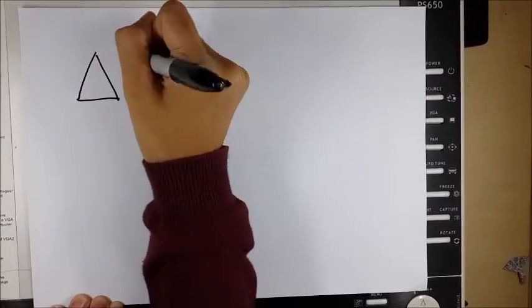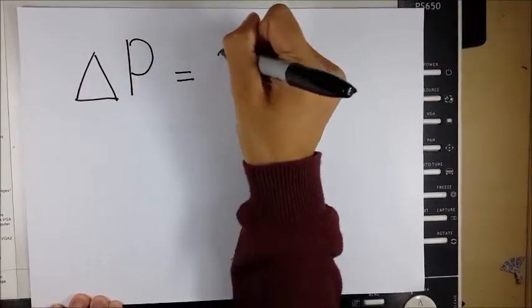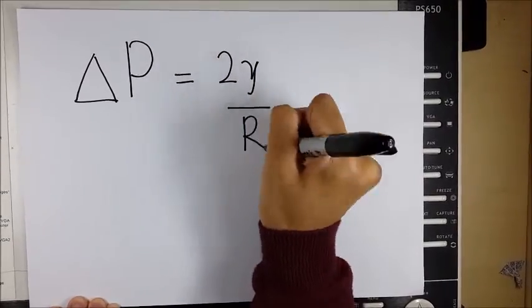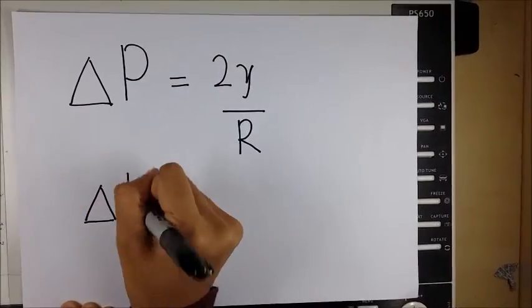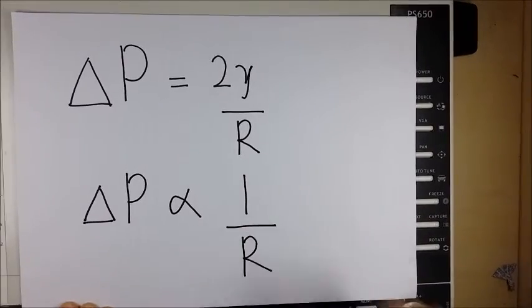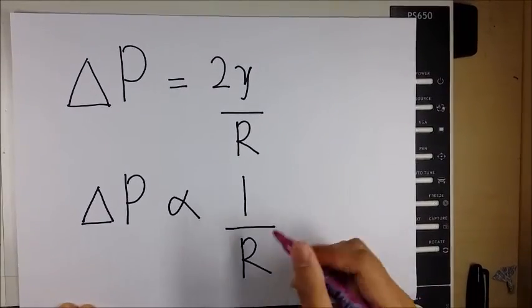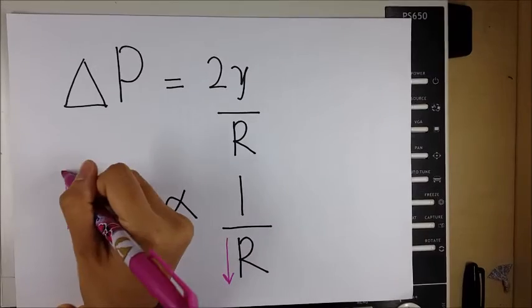The small balloon deflates because it has a higher pressure due to its small radius. The phenomena can be modeled by the Laplace equation as shown above, where pressure is inversely proportional to radius, and as the radius decreases, the pressure increases.